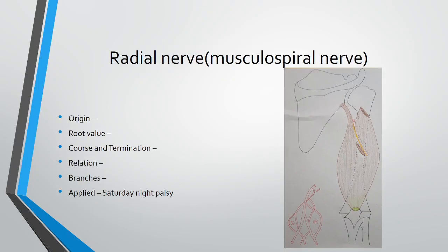Now, the important nerve seen in this posterior compartment is the radial nerve. The radial nerve passes into the substance of the triceps, or between the medial and lateral heads of the triceps. This nerve then crosses from the lateral to the medial side, and at the elbow it again pierces the lateral intermuscular septum and is seen in the front of the elbow joint. The radial nerve is the largest branch of the posterior cord of the brachial plexus.